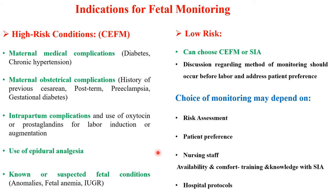For low-risk pregnancies, the choice between continuous and intermittent auscultation depends on risk assessment, patient preferences after proper discussion, availability and training of nursing staff, and hospital protocol. Intermittent auscultation requires more personnel and experience, and some hospitals mandate continuous monitoring for all patients.